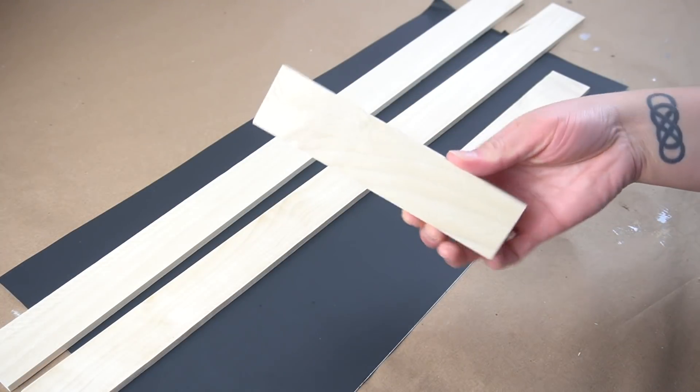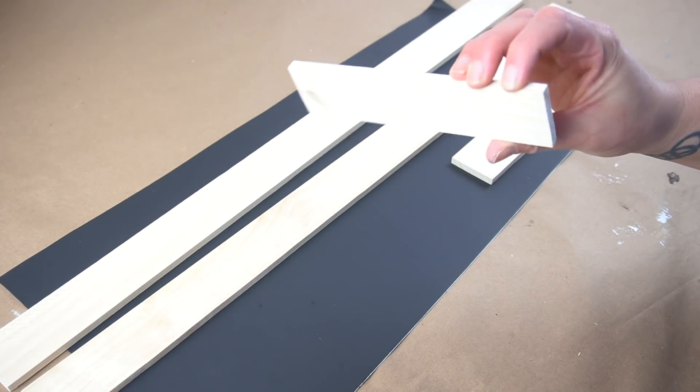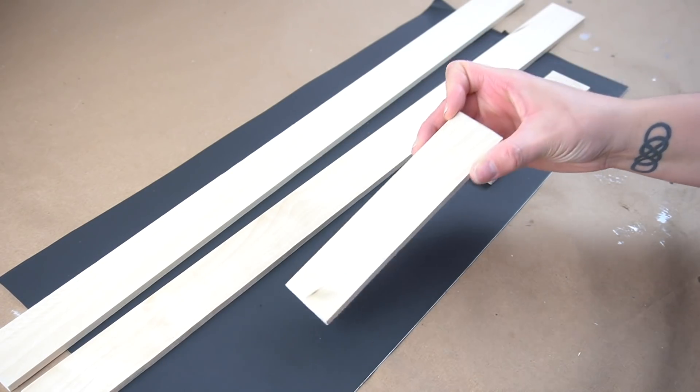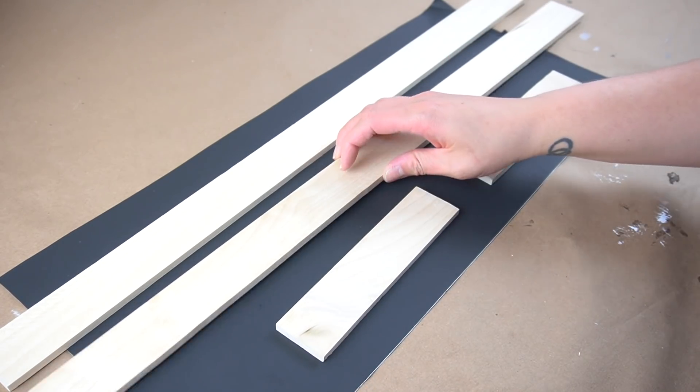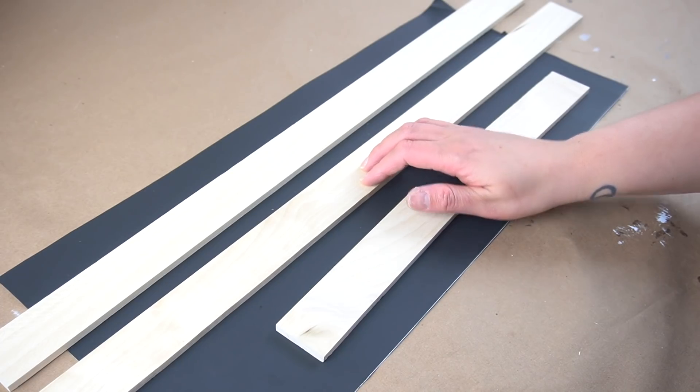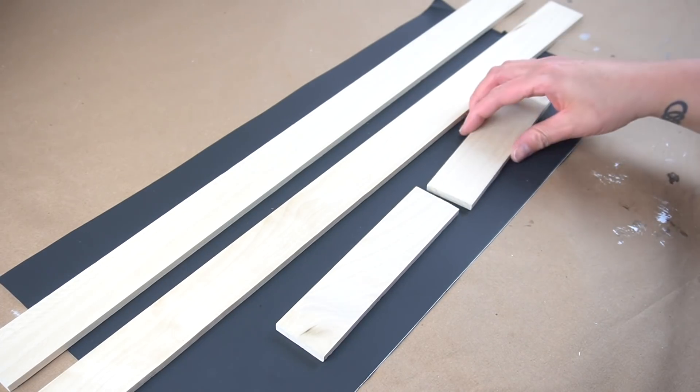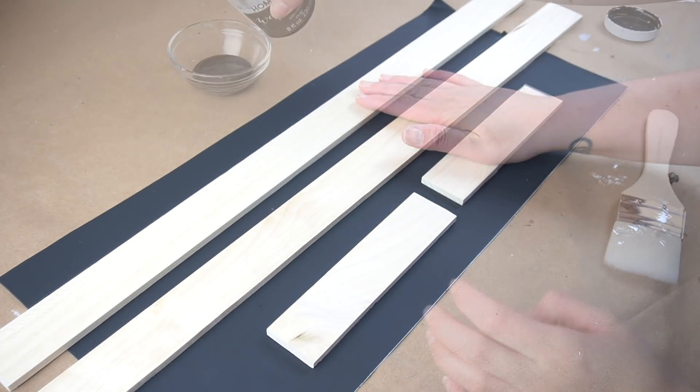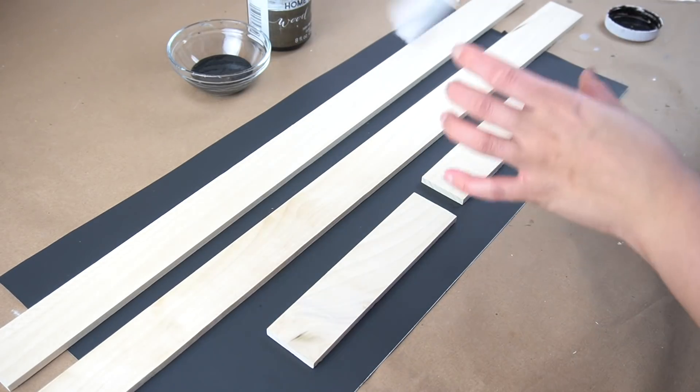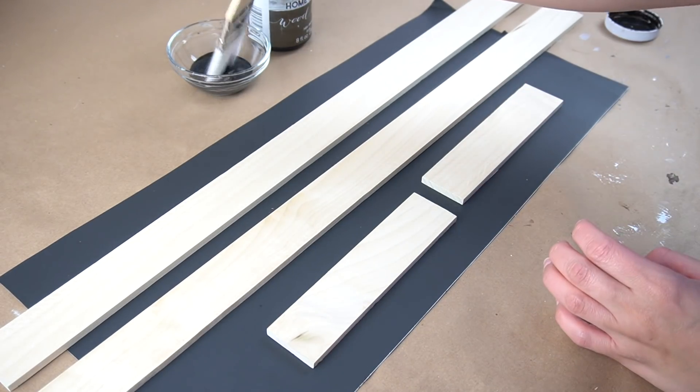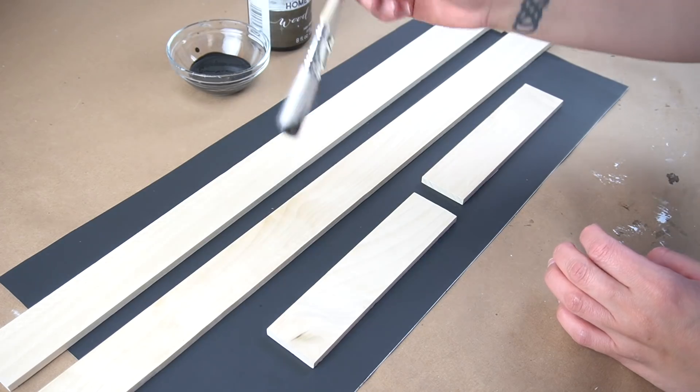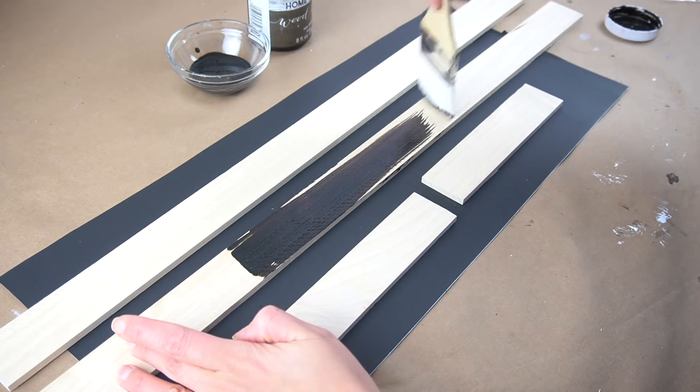Now before I did anything with those, I got some poplar boards that I get from Home Depot. These come in three foot lengths, and they're only a dollar and five cents, and I always have these on hand in case I need to make any frames or do any projects with them. So I got these cut in order to make a frame for this project, and I got some of my favorite wood tint in the color walnut, and I gave them a good stain.